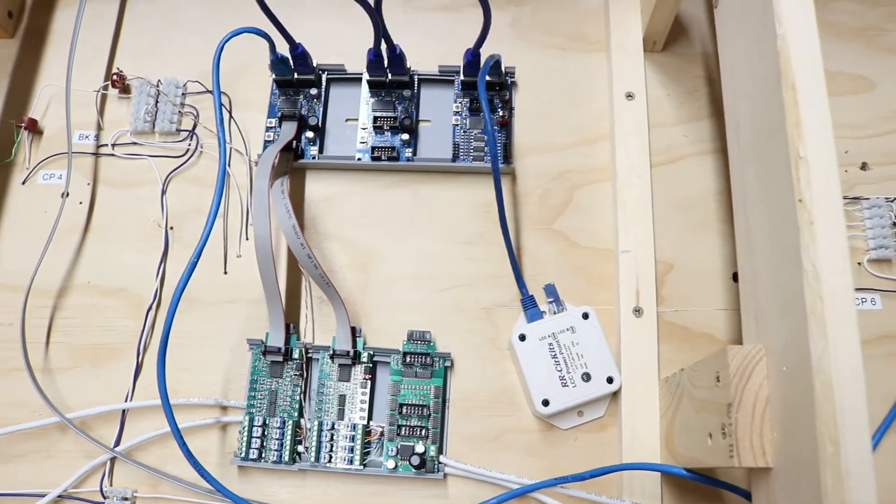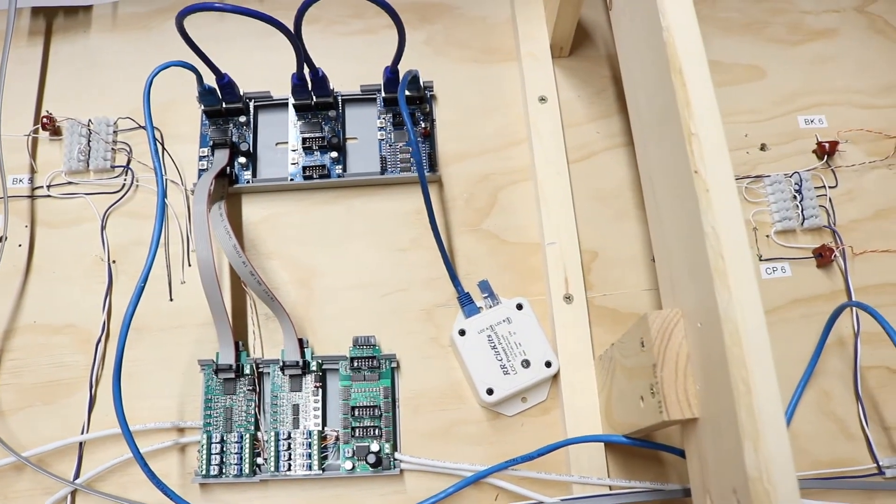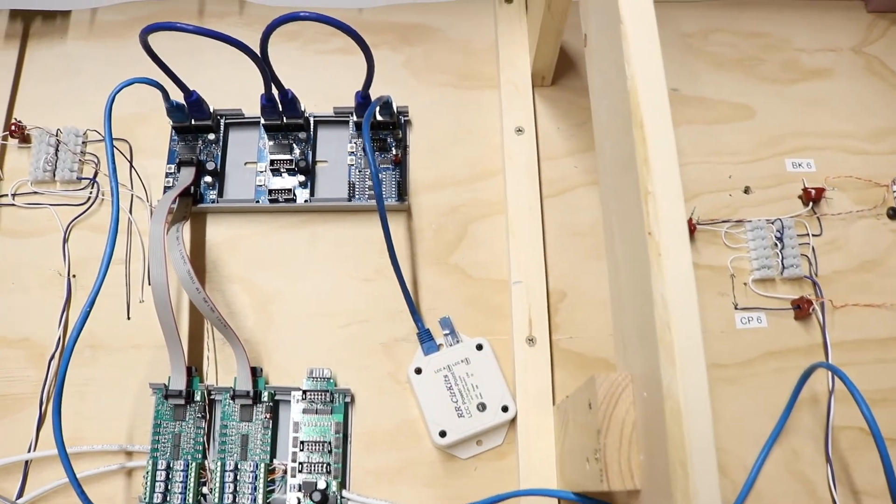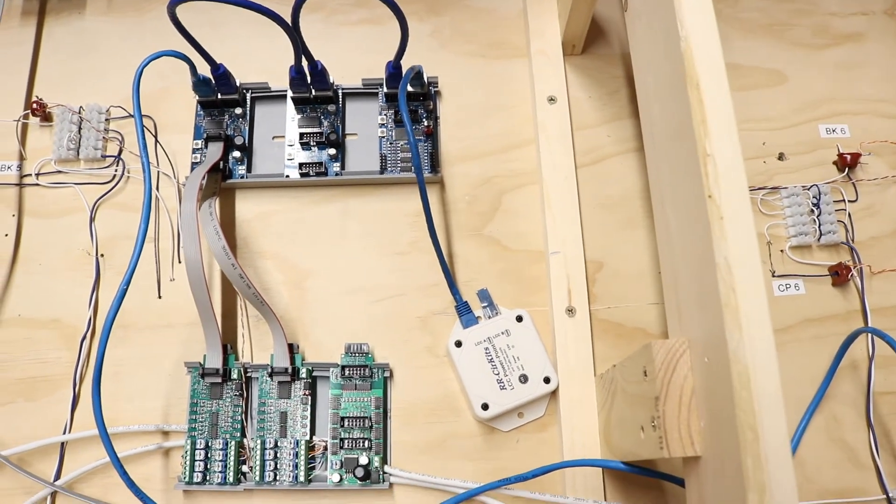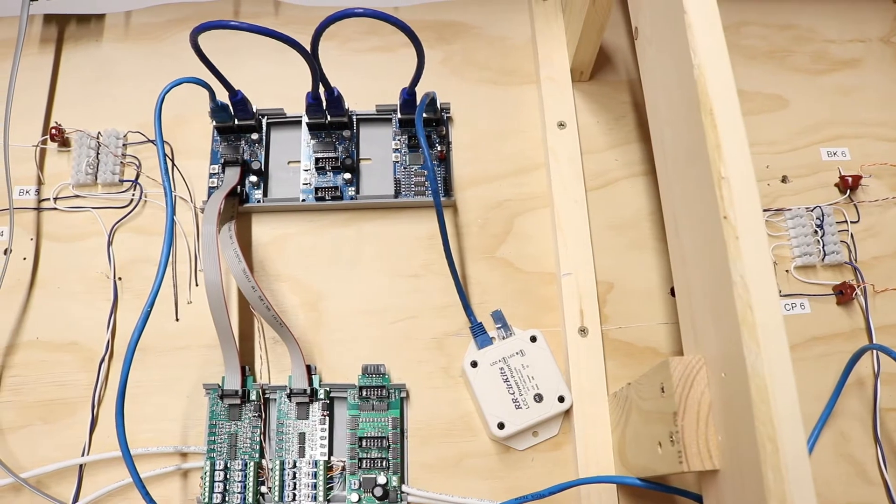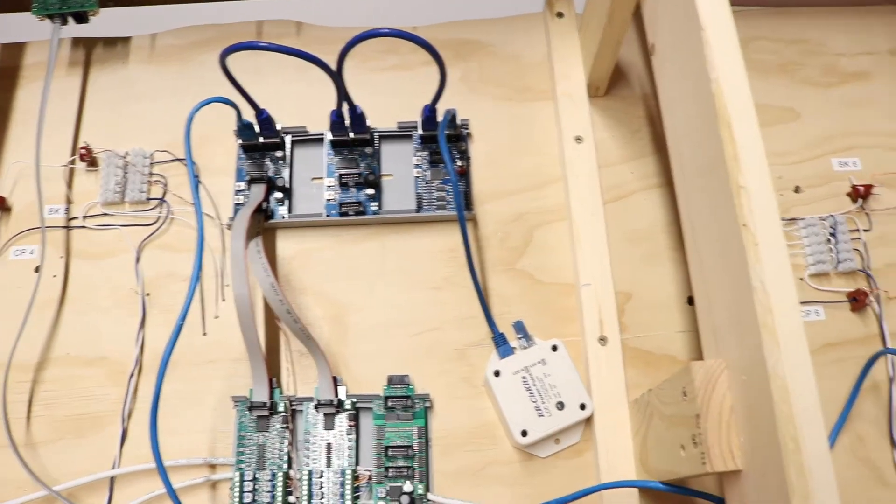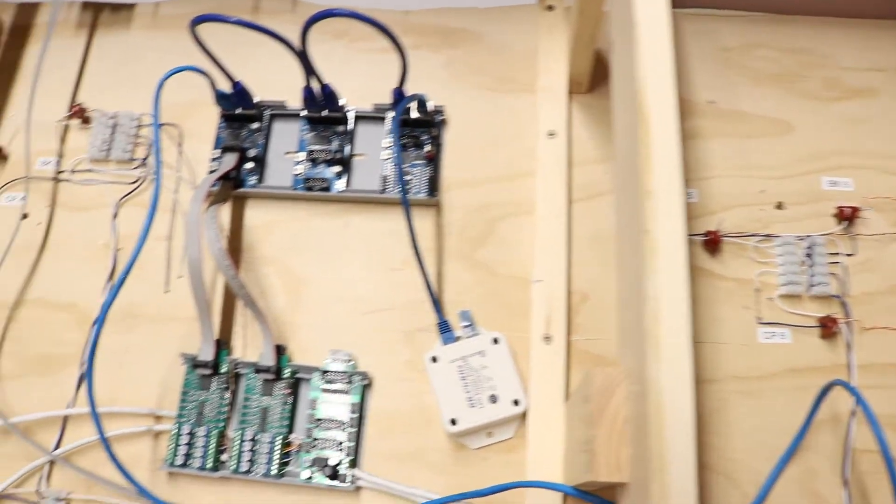That's what I did last night. I got it all downloaded and got the Pi booted up. I think I paid, I can't remember exactly, but less than $100 for that particular electronic component that's going to be the brains of the entire layout. Even my big layout. This is a module for the bigger layout. But that's where I'm at right now.